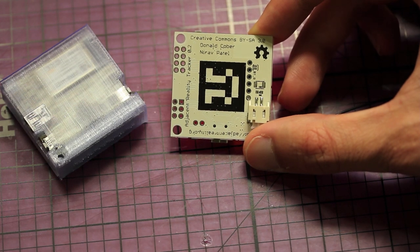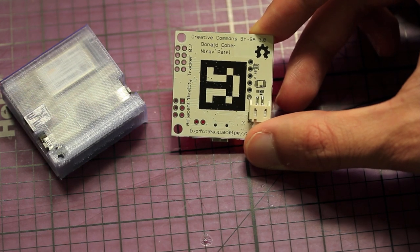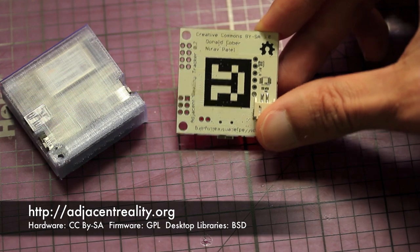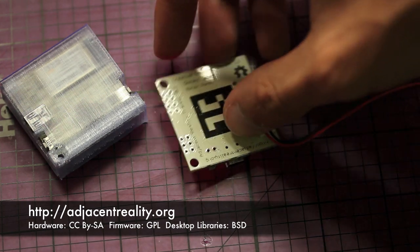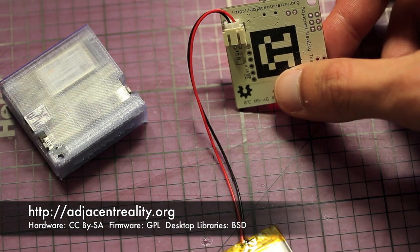Tracker is open source hardware, and the firmware and desktop libraries are also open source. You can download the source code and get more information about the project at adjacentreality.org.